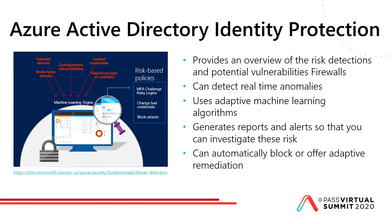Azure Active Directory Identity Protection provides an overview of risk detections and potential vulnerabilities with firewalls. It can detect real-time anomalies using adaptive machine learning algorithms, generate reports and alerts so you're aware and can investigate, and automatically block and offer adaptive remediation. Note that Azure AD Identity Protection is an Azure Active Directory Premium P2 edition feature.